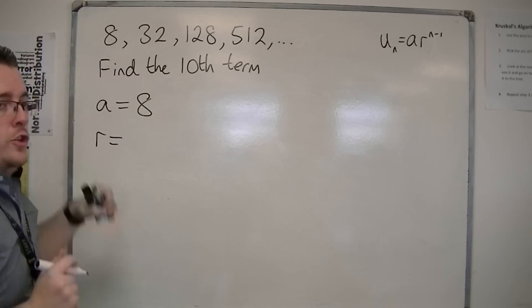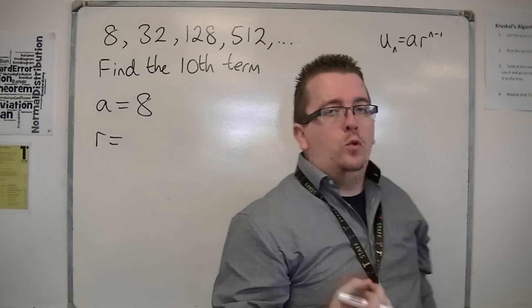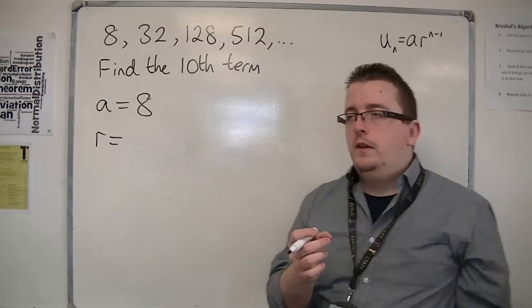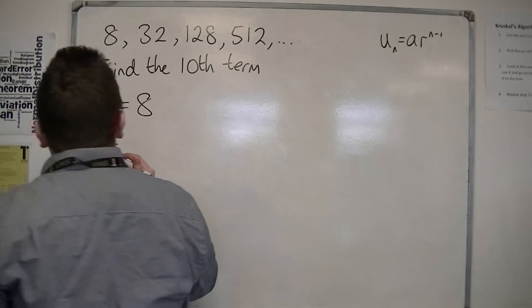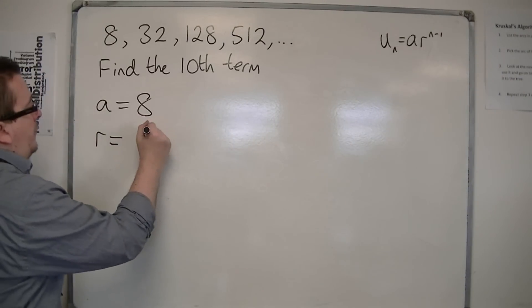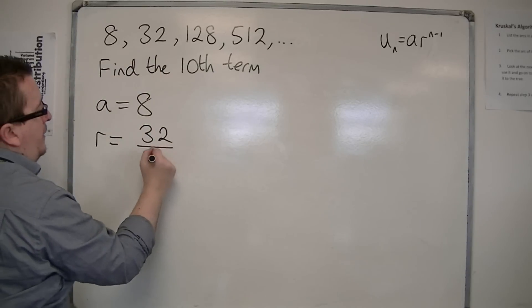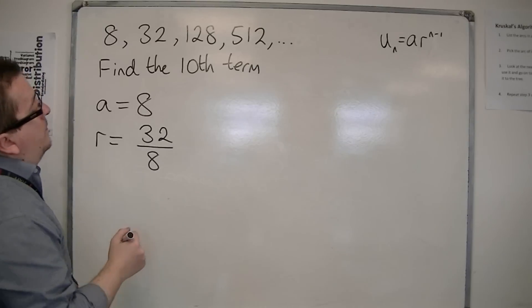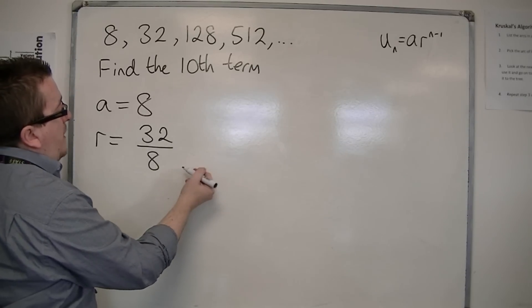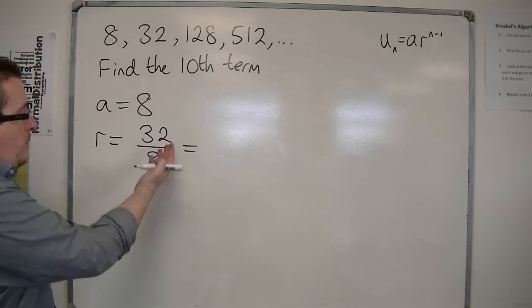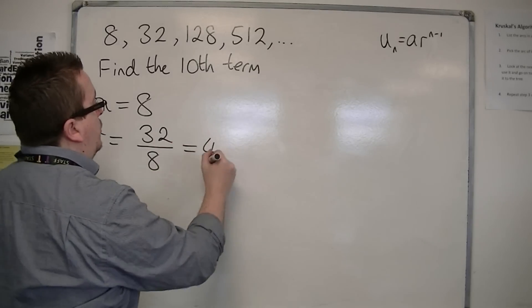r, the common ratio, can always be found if you know two consecutive terms in a sequence. So, you can take the second term, for example, and divide it by the first term. So, 32 divided by 8. And that's why it's called a common ratio with the division. So, 32 divided by 8 is 4.